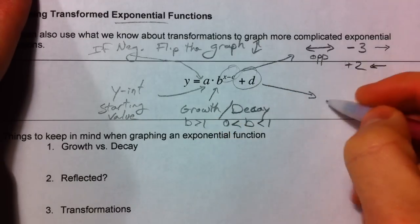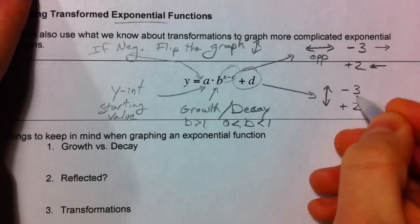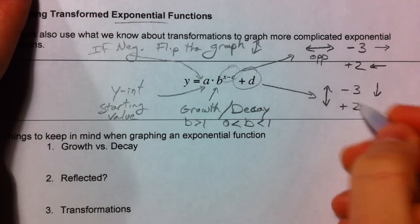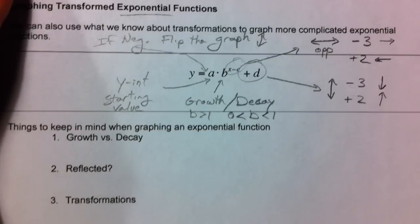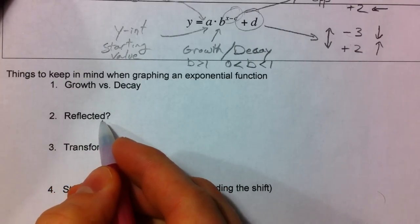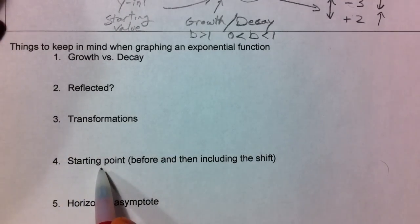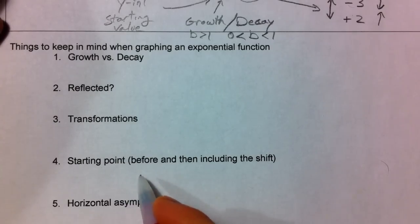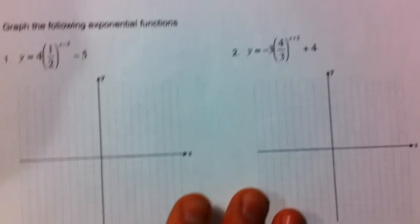The 'd' term is not with the x, so it affects the graph vertically — up and down — exactly how we think. A minus three at the end shifts it down; a plus two shifts it up. For every graph, check: is 'b' growth or decay? Is 'a' positive or negative? What are the transformations — up, down, left, right? Then shift your starting point using the transformations. The asymptote starts at y equals zero and shifts from there.